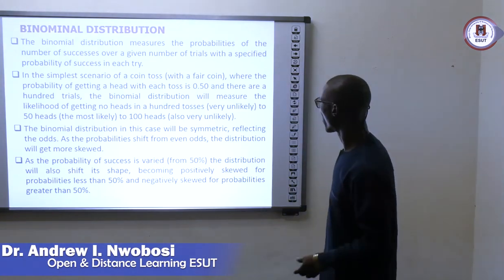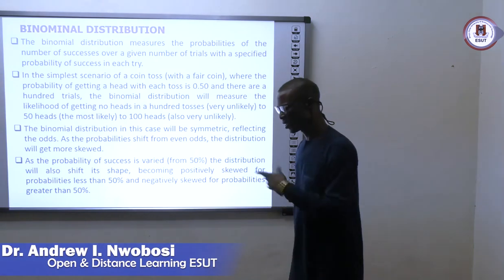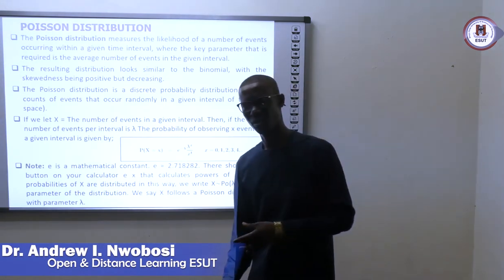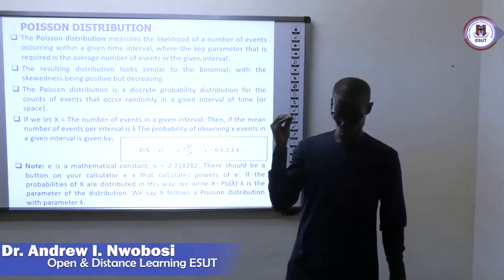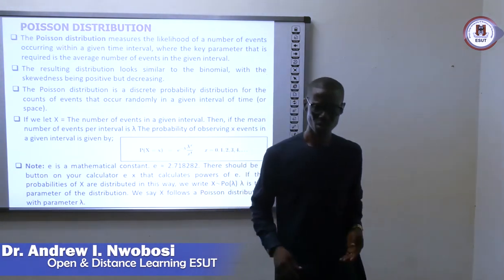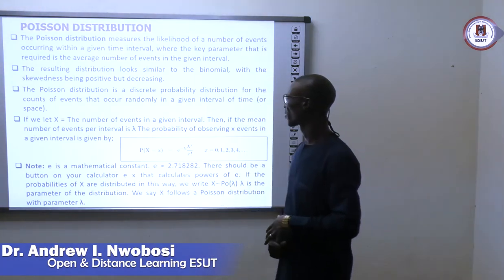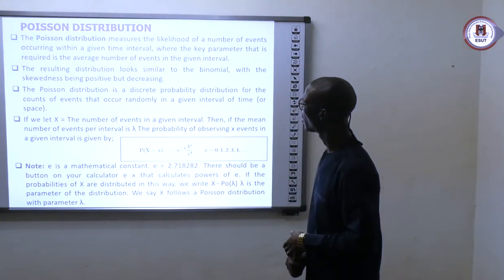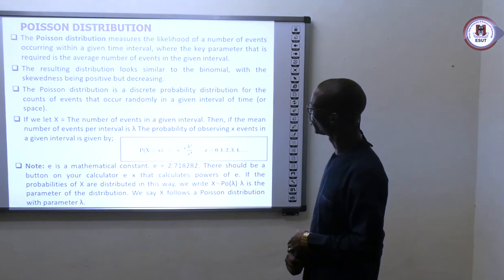Mainly we see binomial distribution in trials — for example, a toss of a coin or throw of dice. Either you have head or you have tail. If you attempt any event, either you get success or you get failure. So any statistical distribution that has two outcomes is called binomial or Bernoulli distribution.